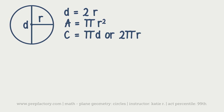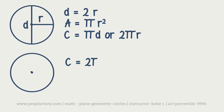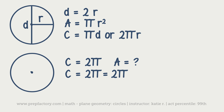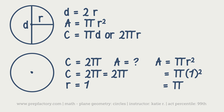A lot of times you're going to use one formula to find the other. For instance, if a problem gives us a circle and says the circumference is 2 pi, and asks what the area is — we know circumference equals 2 pi r, which equals 2 pi. So 2 pi r equals 2 pi, meaning r equals 1. Then area equals pi r squared equals pi times 1 squared, which equals pi. We successfully moved from circumference to finding the area.